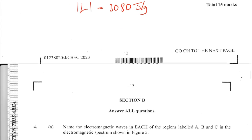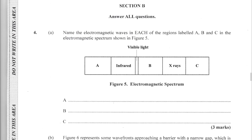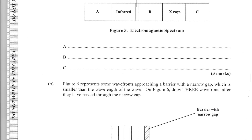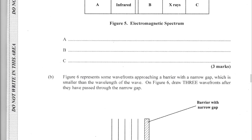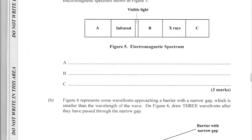Section B, Question A: name the electromagnetic waves in each region labeled A, B, and C in the electromagnetic spectrum shown in figure 5. A is microwaves, B is UV rays, and C is gamma rays — that gives you your three marks.